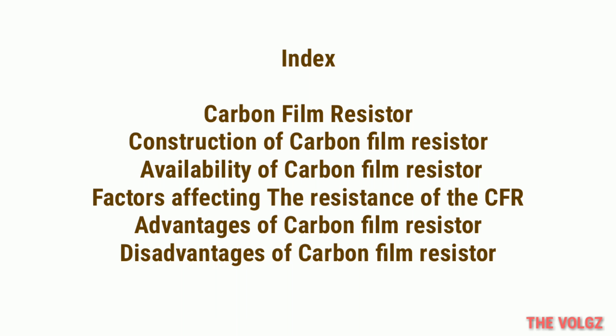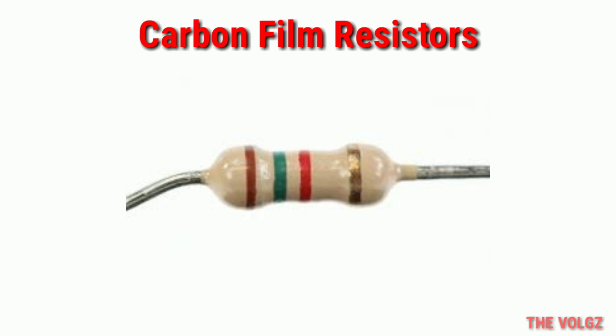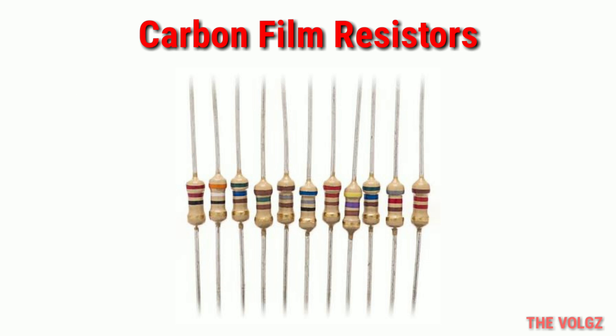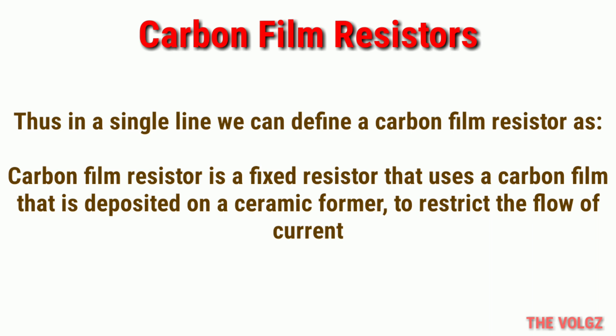The first topic is the carbon film resistor. It is clear from the name that this resistor is made from carbon film. The carbon film is deposited on a ceramic former. This is a fixed type of resistor, meaning it provides only a single resistance value. The carbon film plays the role of resistive material that restricts the flow of current in a circuit. In a single line: a carbon film resistor is a fixed resistor that uses a carbon film deposited on a ceramic former to restrict the flow of current.